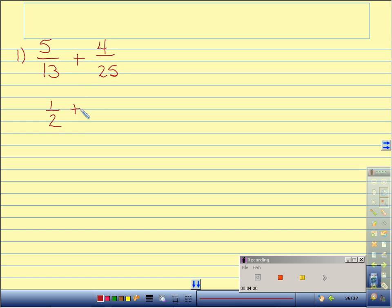Plus 4 over 25. Remember the description that describes that one. The numerator is very small when compared to the denominator, so we benchmark this to a zero. When we add one half and zero, we get one half.